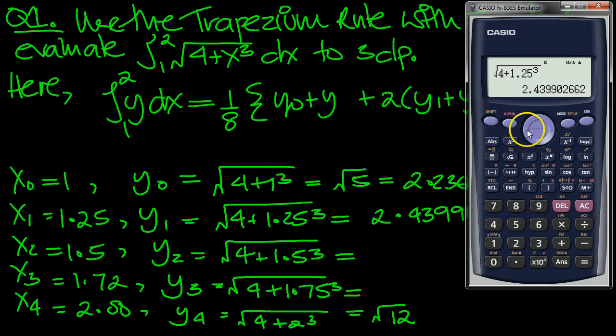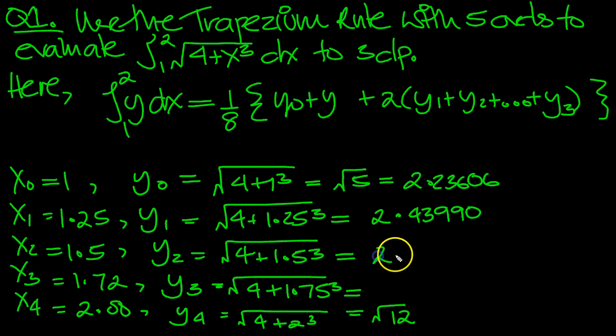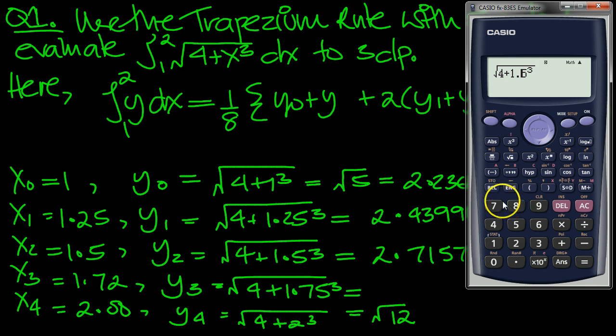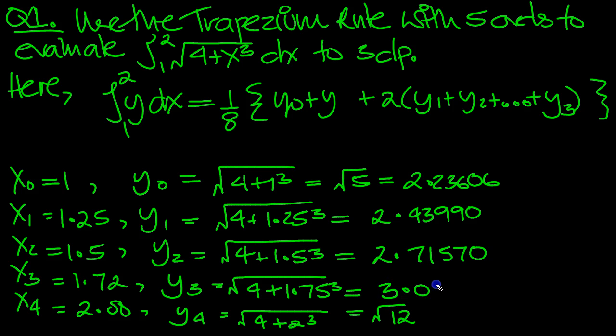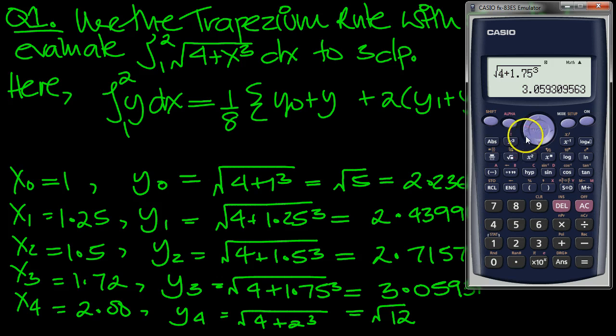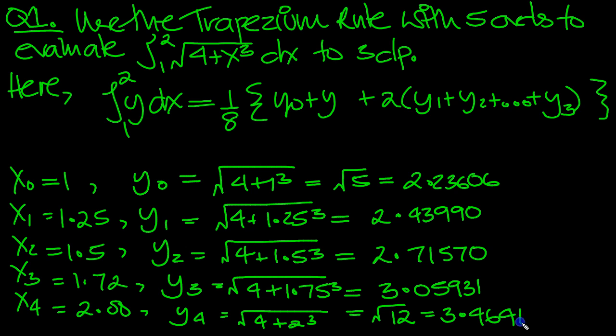Now 1.5. Input it. 2.71570. Then the 1.75. 3.05931. And then the root 12, we can just put 2 in, can't we, here, just to be consistent. We get 2 root 3. 3.46410.